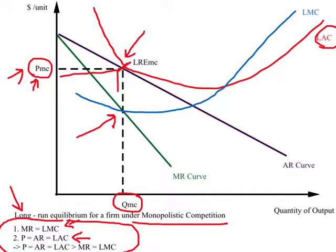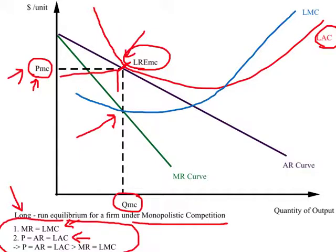This tangency point becomes the long-run equilibrium point for a firm under monopolistic competition. We have used two conditions: MR equals LMC, and price — which is the same as average revenue — must equal long-run average cost. Combining these, the full condition for long-run equilibrium is: price equals average revenue equals long-run average cost, and since price or average revenue is greater than marginal revenue, we require marginal revenue to equal LMC. This whole chain becomes your condition for long-run equilibrium.